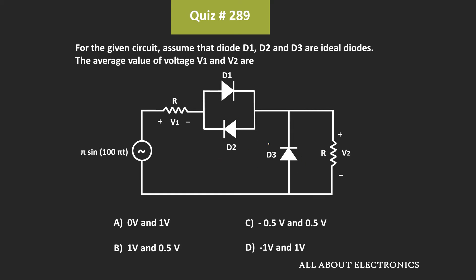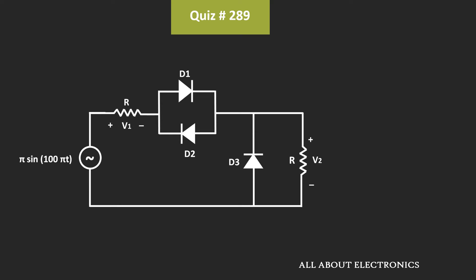Let's see how this circuit behaves during the positive half cycle. During the positive half cycle, diode D1 will conduct, while D2 and D3 will remain off. That means in the positive half cycle, if we see the equivalent circuit, then it will look like this.